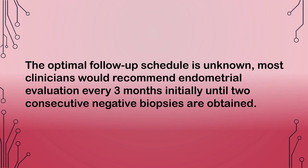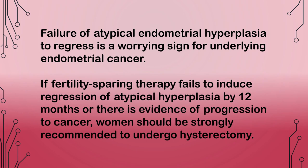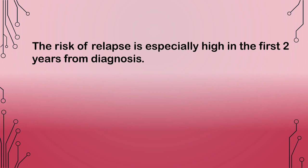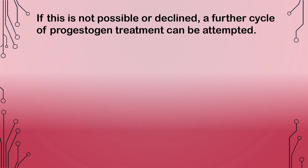The optimal follow-up schedule is unknown. Most clinicians would recommend endometrial evaluation every 3 months initially until 2 consecutive negative biopsies are obtained. Failure of atypical endometrial hyperplasia to regress is a worrying sign for underlying endometrial cancer. If fertility-sparing therapy fails to induce regression by 12 months, or there is evidence of progression to cancer, women should be strongly recommended to undergo hysterectomy. The risk of relapse is especially high in the first 2 years from diagnosis. If relapse occurs during follow-up, women should also be advised to undergo hysterectomy as it is often associated with endometrial cancer at the final hysterectomy specimen. If this is not possible or declined, a further cycle of progestogen treatment can be attempted.